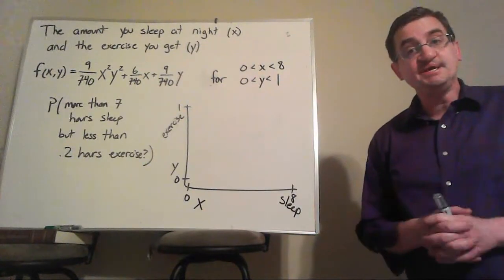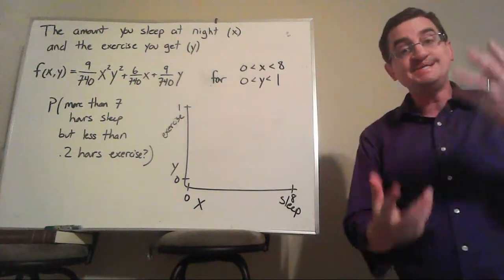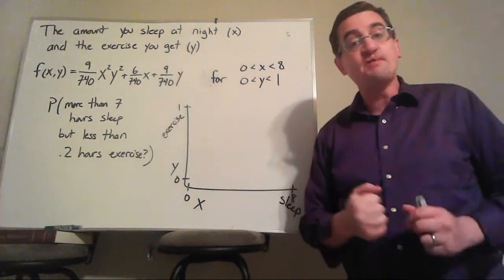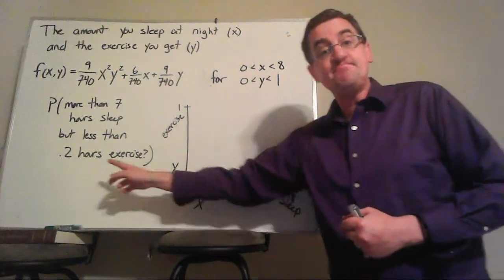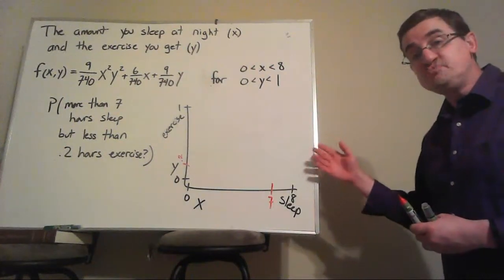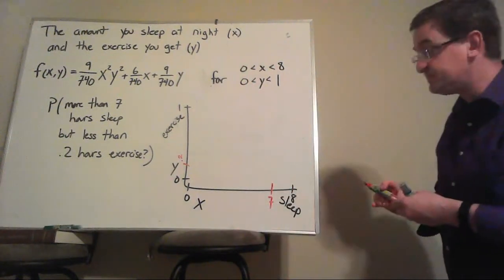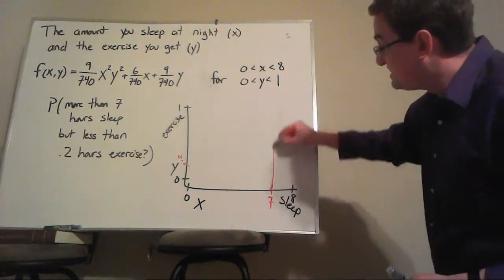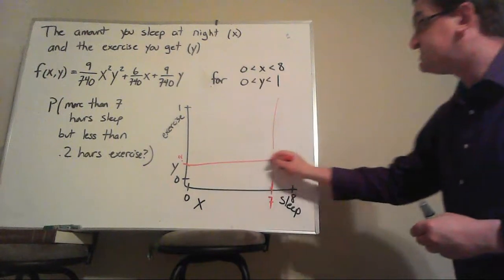Being able to do this kind of thing is very useful in real life. We can talk about exercise and sleep together. And let's do a probability here. I want to know the probability of more than seven hours sleep, but less than 0.2 hours of exercise. And this is where our picture is super handy. Even though I can't draw the three-dimensional probability floating over it, I can still look at sleep by exercise and say, okay, here's seven hours of sleep. And here's 0.2 hours of exercise.